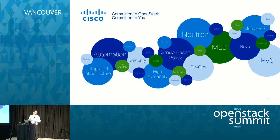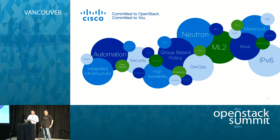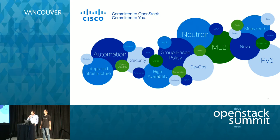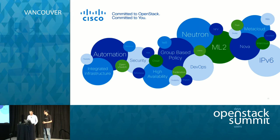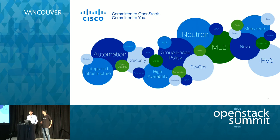That concludes my section. I want to bring Jim back to close up and take questions. We're glad to have had a chance to share how we use Puppet and Heat. Looking down the road, there's a tremendous opportunity to continue to grow the solution and leverage other OpenStack components. This is one example showing how decoupled the solution is — you can leverage any components you need, and there are tremendous opportunities ahead.